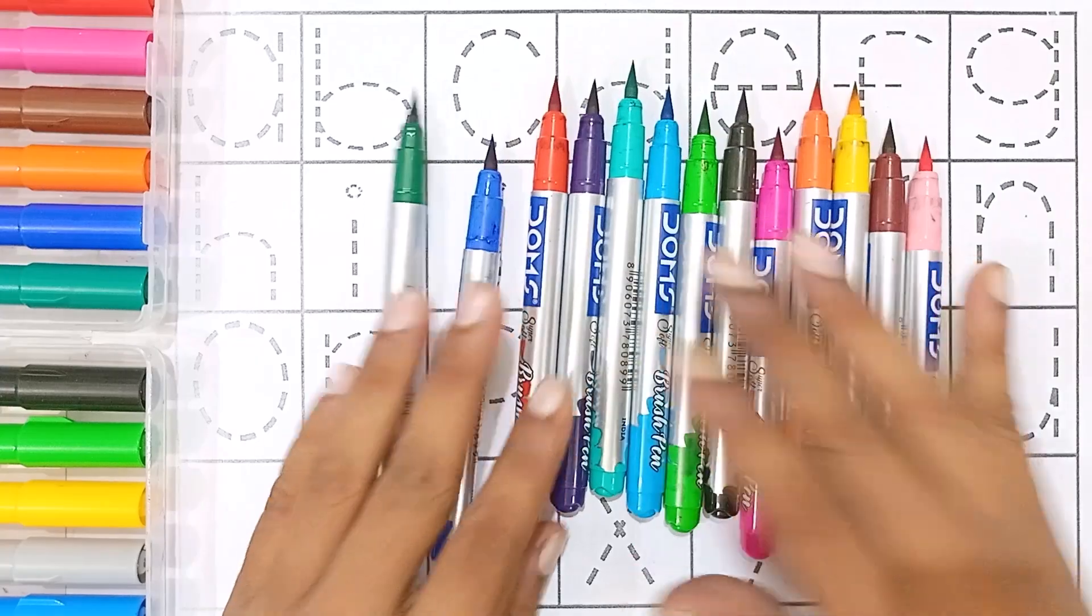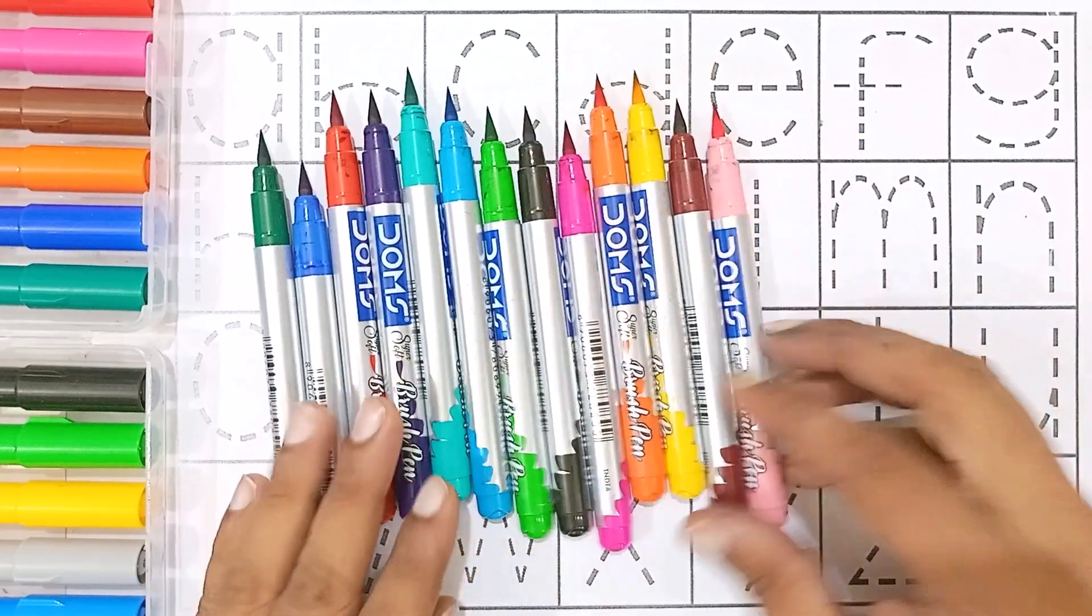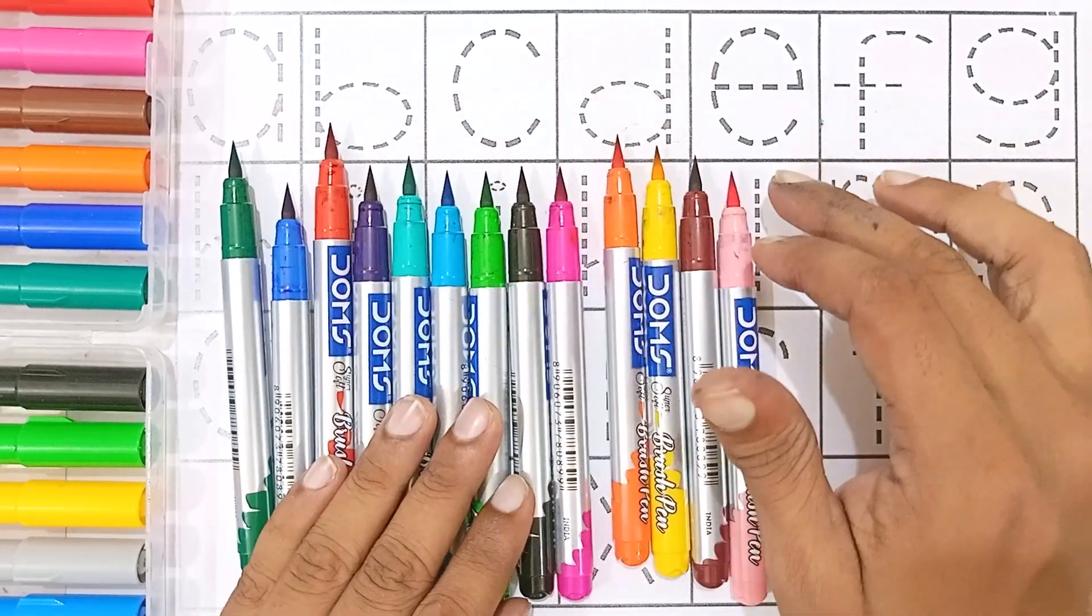Hello kids, let's learn some colors, then reading and writing small letters A, B, C, D.